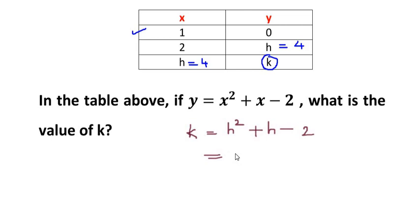But as you know, we got the h value before as 4, so we substitute in place of h: 4 square plus 4 minus 2. So 4 square is 16 plus 4 minus 2. So 16 plus 4 is 20, and 20 minus 2 is 18. So we get the value of k as 18.